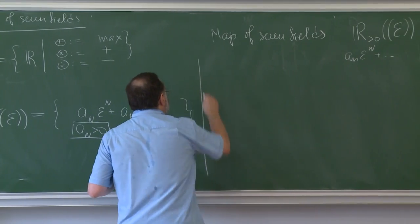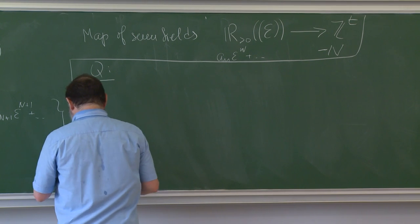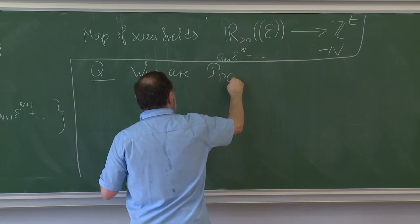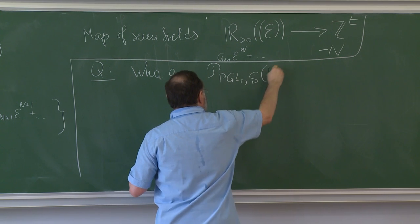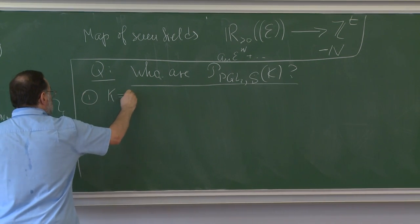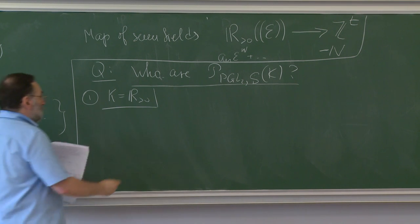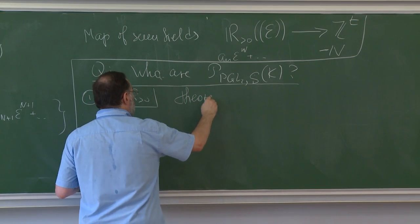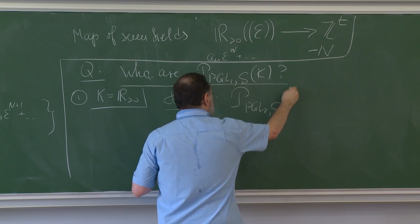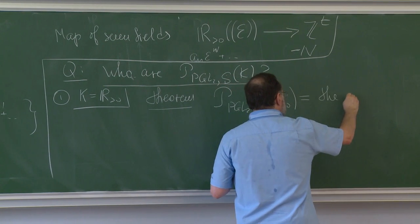Now the question is: who are those sets P(PGL2, S)(K) for various semifields K? Can we interpret them in a meaningful way? The first question is what we get when the semifield is positive real numbers.